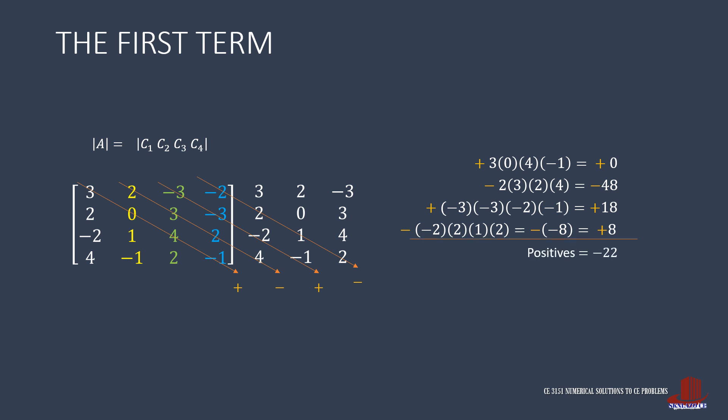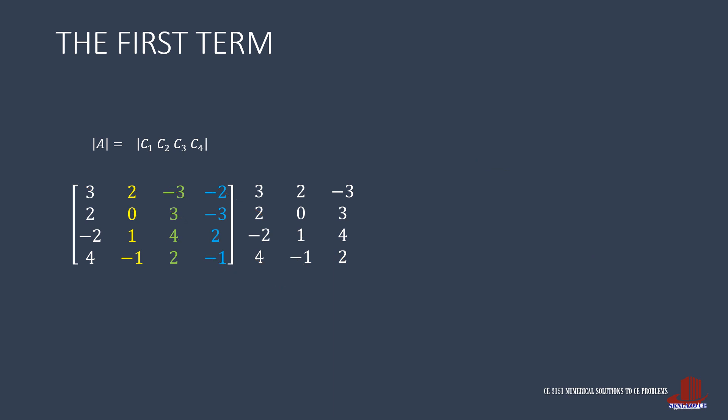Adding all the positives gives negative 22. Now work on the negatives. The first anti-diagonal covers 4, times 1, times 3, times negative 2, and is preceded by a negative sign. The product turns out as the negative of negative 24, making it positive 24.